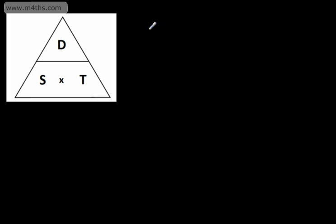When you're doing these particular questions, this triangle might help. If we look at it, we've got S, D, and T. Let's say we wanted to find the distance. All we would do is cover the D, and we could see that distance is equal to speed multiplied by time. We can simply write that distance is going to be equal to the speed multiplied by time.